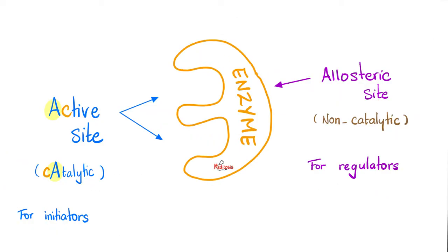Each enzyme has two doors: the front door — the active site — and the back door — the allosteric site. The active site is catalytic, while the allosteric site is non-catalytic. The active site is for initiators, for the substrate. The allosteric site is for regulators — allosteric stimulation, allosteric inhibition, etc.